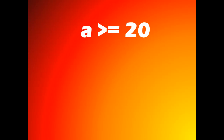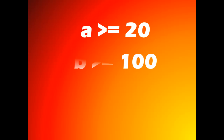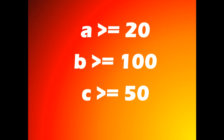It is used like this: a is greater than or equal to 20, which means a can be 20 or more; b is greater than or equal to 100; and c is greater than or equal to 50.